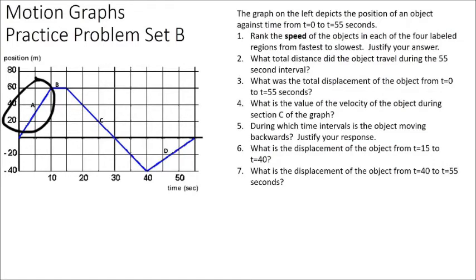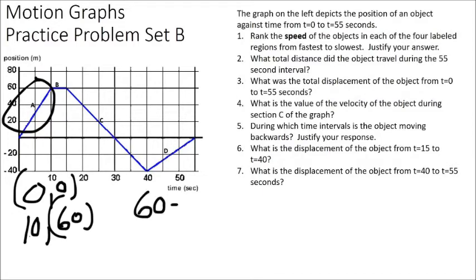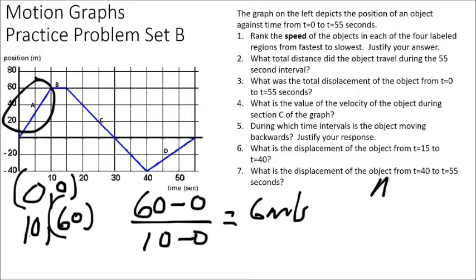For section A: at 0, y equals 0; at 10 seconds, y equals 60. Change in y (60 minus 0) over change in x (10 minus 0) gives 60 over 10, or 6 meters per second. For section B: we have a horizontal line, so the slope is always zero. Object B has zero average velocity — between about 10 and 15 seconds, this object is not moving.